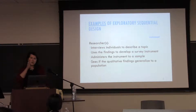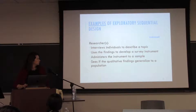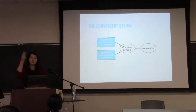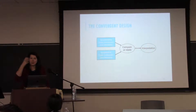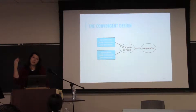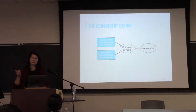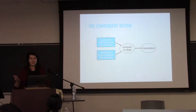Another form is the convergent study, where both types of data are gathered at the same time with equal dominance. You spend as much time, energy, and resources collecting each type of data. Then you make sense of it in a comparison and relation stage, and then you interpret your evidence.